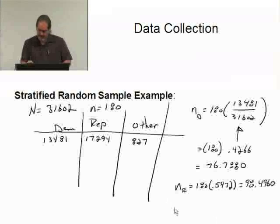And, N sub O, the others, was 2%, roughly, 180 times .0262, which gives me 4.7160.